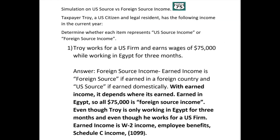The answer is foreign source income. Earned income is foreign source if earned in a foreign country, and US source if earned domestically. Since it was earned in Egypt, all $75,000 is foreign source income — even though Troy is only working there for three months and works for a US firm. Earned income includes wages, employee benefits, Schedule C income, 1099 miscellaneous, and 1099-NEC (non-employee compensation). With earned income, it's taxed based on where it's earned.